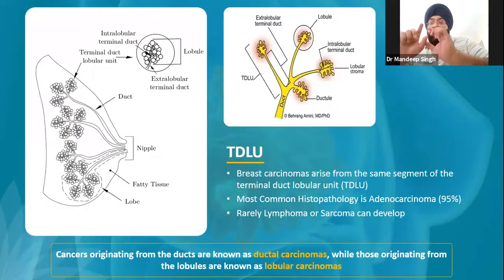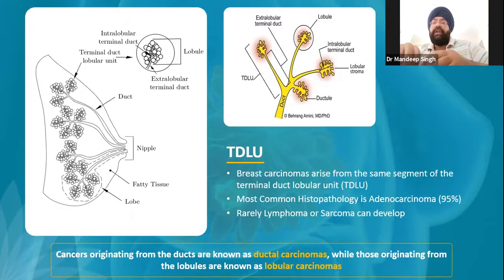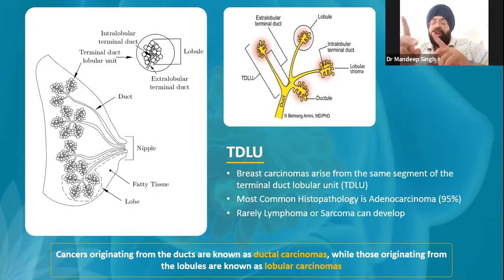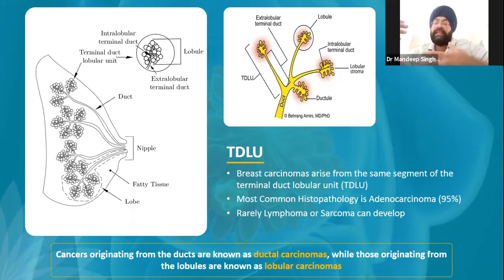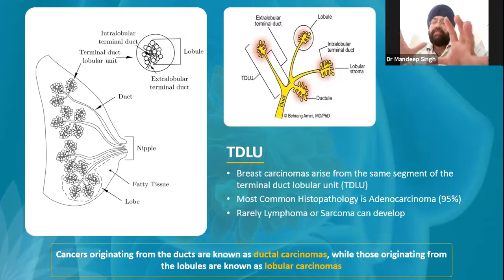I want to explain the concept of the terminal ductal lobular unit. When we order a breast biopsy, we are looking at two things: first, what is the histopathological picture of the cancer, and second, what is the molecular signature of the cancer. I will first describe the histopathological picture.